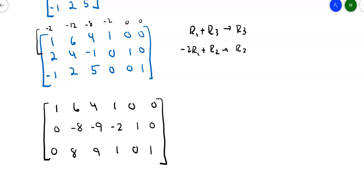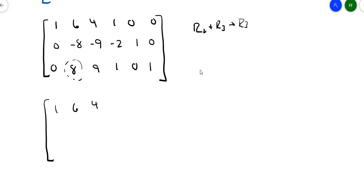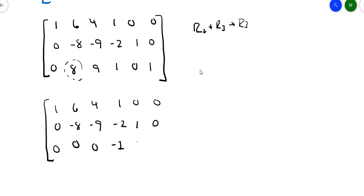Now my goal is to get rid of the 8 down here. It seems like a relatively simple thing to do: add row 2 to row 3, answer goes in row 3. Top row remains 1, 6, 4, 1, 0, 0. Second row remains 0, negative 8, negative 9, negative 2, 1, 0. Combining the two rows: 0 plus 0 is 0, 8 plus negative 8 is 0, and 9 plus negative 9 is also 0. And then I get negative 1, 1, and 1.